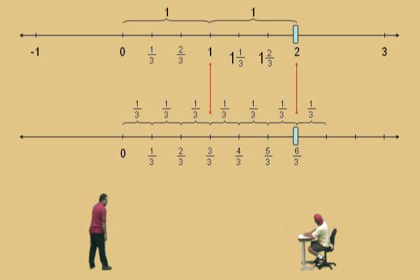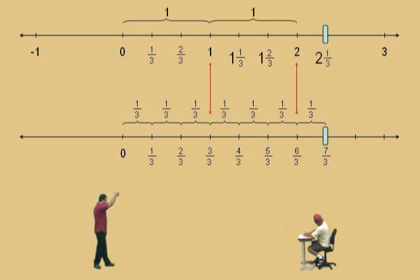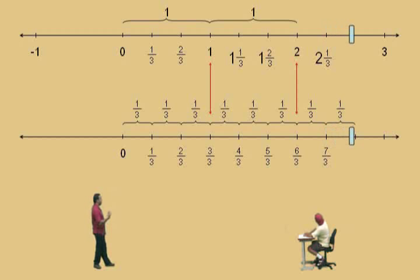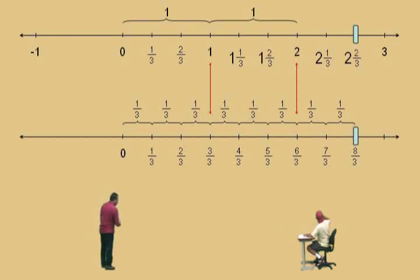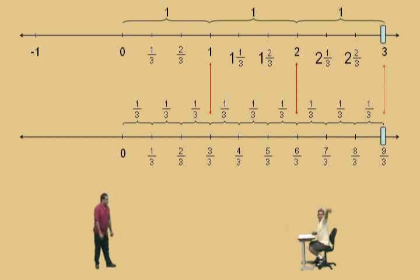Here we go, Charlie. Add another third — seven-thirds, which is the same as two and one-third. If we add another third, that's eight-thirds, which is two and two-thirds. And finally, another third gives us nine-thirds, which is the same as three. So if you have all thirds, just add them up.